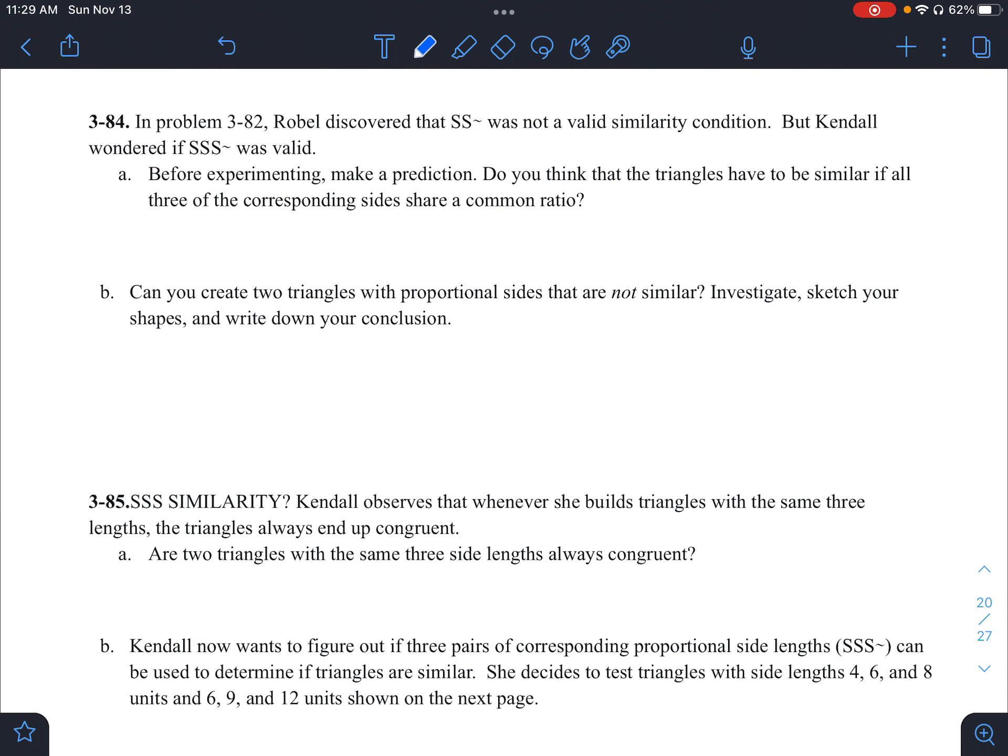So in 84, it says in problem 82, Robel discovered that side side was not a valid similarity, but Kindle wondered if side side side was valid. Before experimenting, make a prediction. Well, we should already know this, right? We should know that all sides, all sides proportional works.